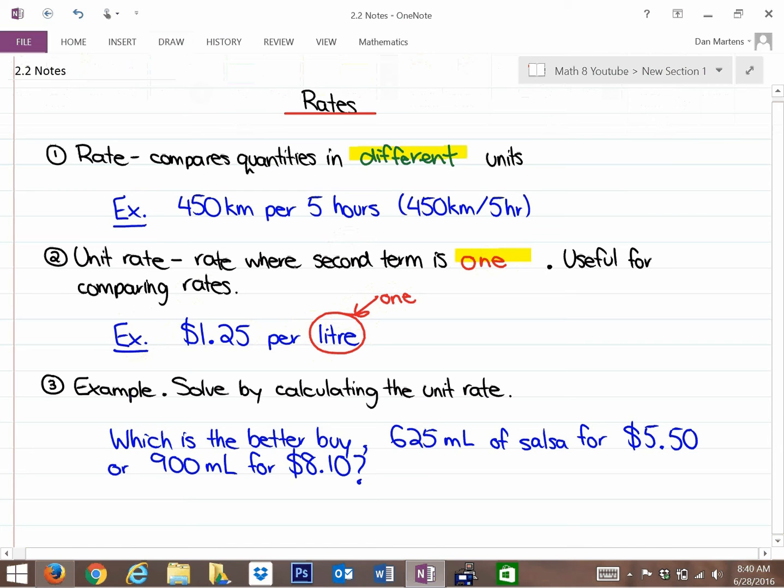Or if you're getting paid, here's another example for you. If you're getting paid, let's say $15 per hour, that would be a unit rate because it's per 1 hour.